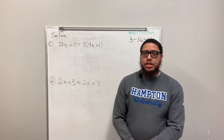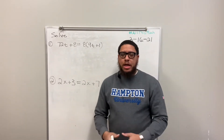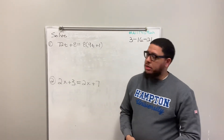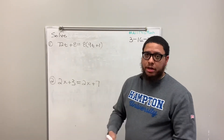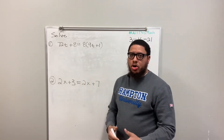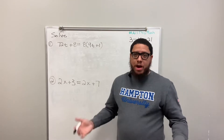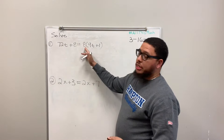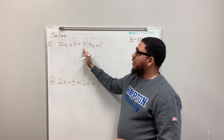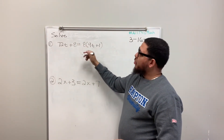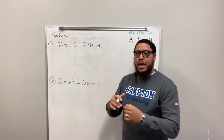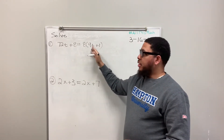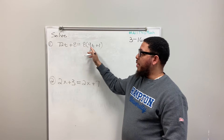First thing I want to do always when solving any equation — if my equation has parentheses in it, I want to get rid of the parentheses. We use the distributive property, which means if there's a number placed adjacent to the parentheses, we simply multiply that number by every term inside the parentheses. The number outside gets multiplied by everything inside.